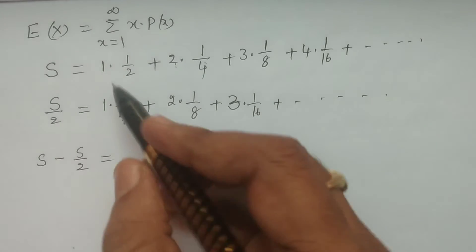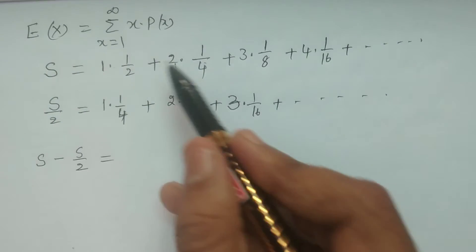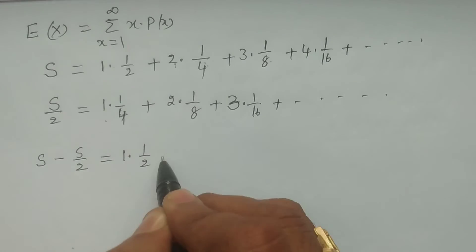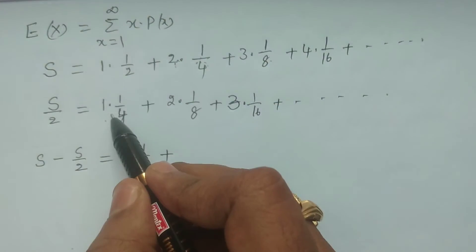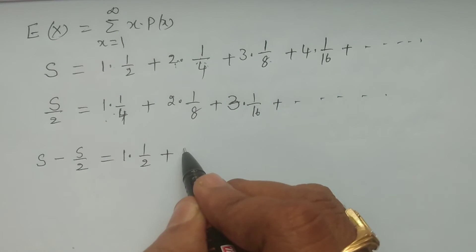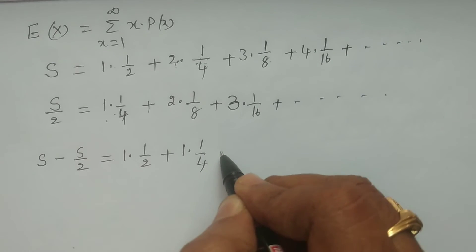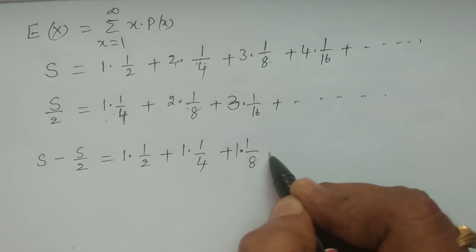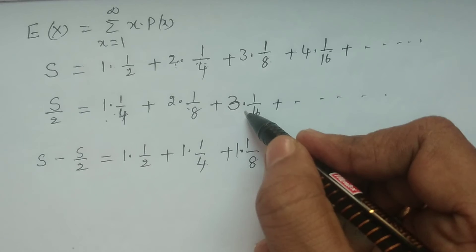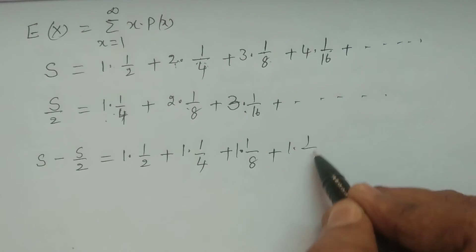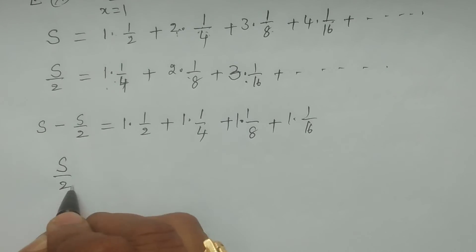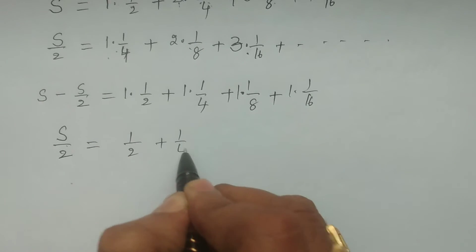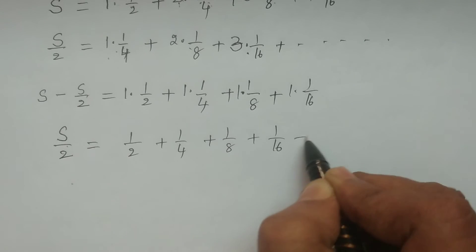Comparing terms: S − S/2 = 1×(1/2) + [2×(1/4) − 1×(1/4)] + [3×(1/8) − 2×(1/8)] + [4×(1/16) − 3×(1/16)] + ... = 1×(1/2) + 1×(1/4) + 1×(1/8) + 1×(1/16) + and so on. So S/2 = 1/2 + 1/4 + 1/8 + 1/16 + ..., which is an infinite geometric series.